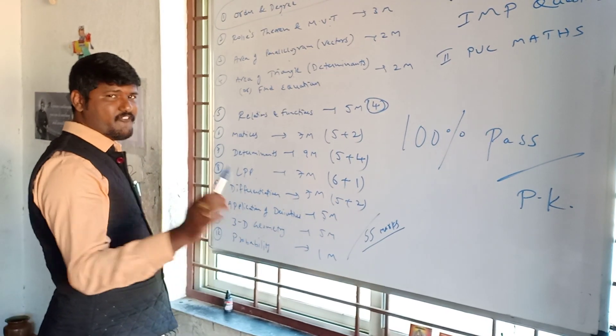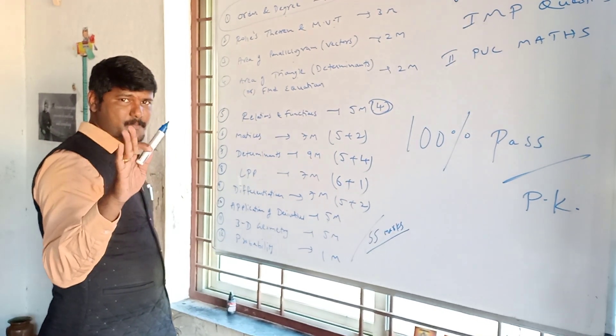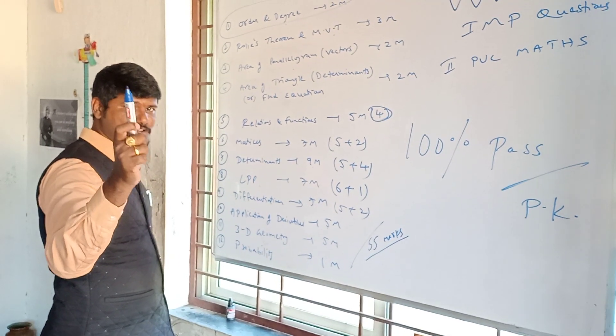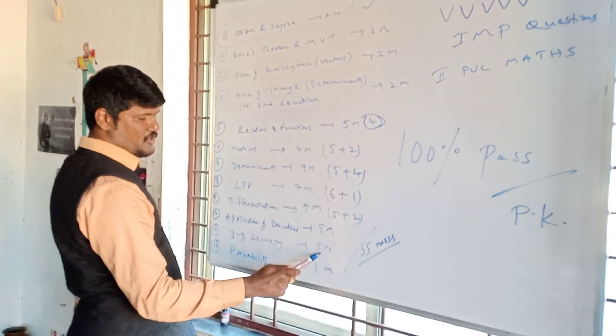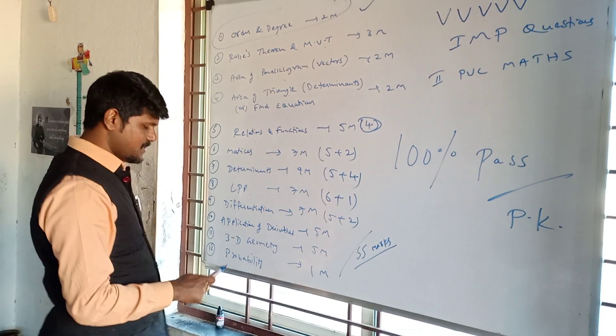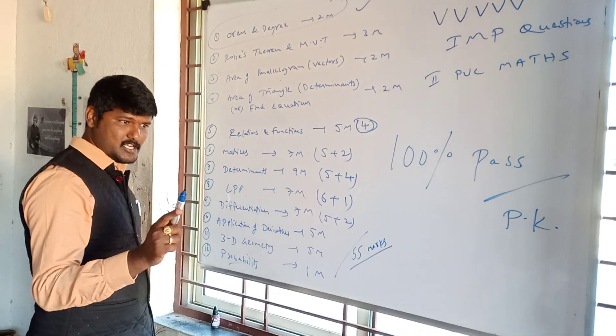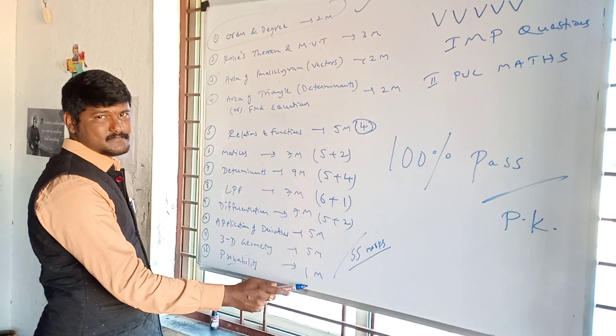3D geometry: we have 4 derivations — very important. Out of that, 1 question for 5 marks. Probability: 1 mark only — just a 1-mark question.